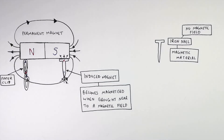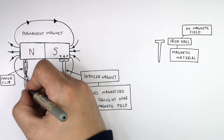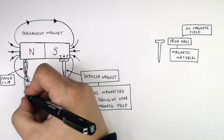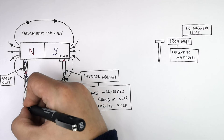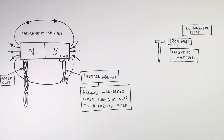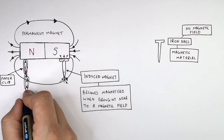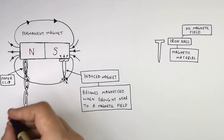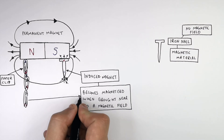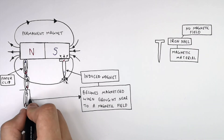This paper clip has become induced due to the magnetic field of the permanent magnet, as well as the paper clip above it. This third paper clip is actually outside the magnetic field lines of the permanent magnet, but it becomes an induced magnet due to the magnetic field of the paper clip it is now attracted to. So this paper clip becomes magnetized when brought near or into a magnetic field, because it is an induced magnet.